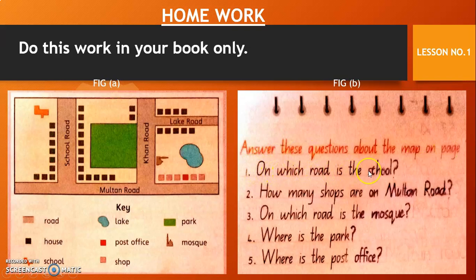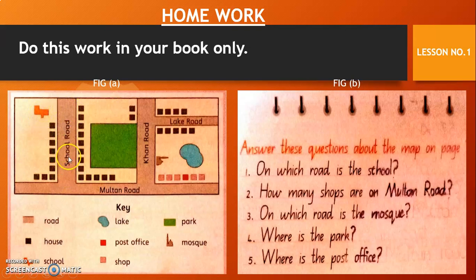On which road is the school? Let's find out. Let's see it from the key — this is the school key. Let's find this key in the map. There is the symbol. On which road is the symbol? The school is on School Road.